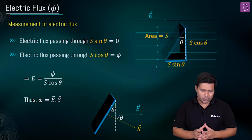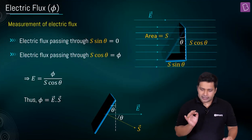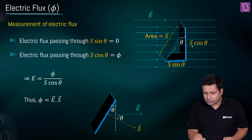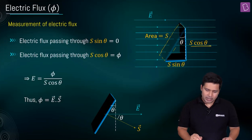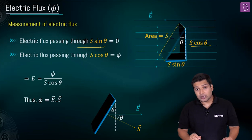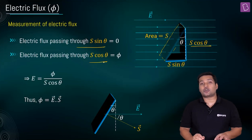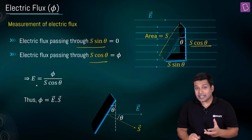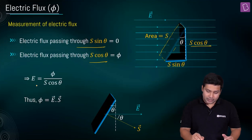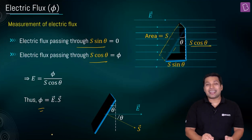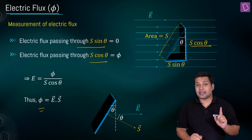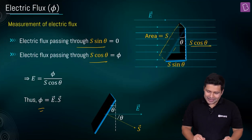To recapitulate: the area is broken into two parts — S cosθ and S sinθ. The electric flux through S sinθ is zero, so total flux passes through S cosθ only. Therefore, electric field intensity E = φ/(S cosθ), which gives φ as the dot product of E⃗ and S⃗ — the electric field vector and the area vector. And of course, this is a scalar quantity.